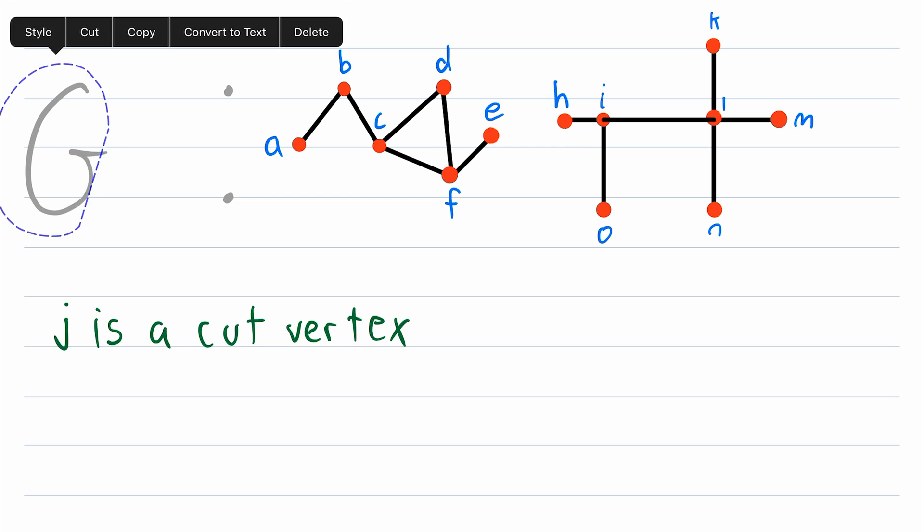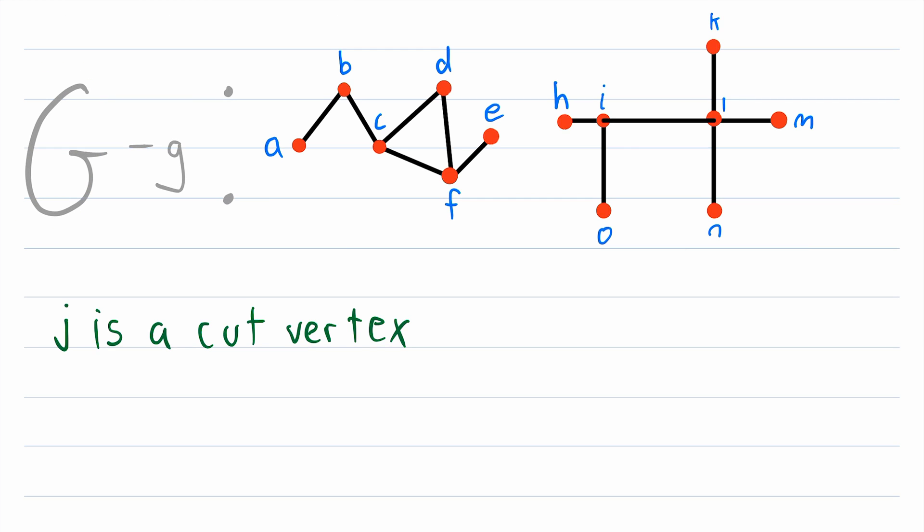So now, technically, this graph that we're looking at is the graph G minus the vertex G. So how many components are in this graph? Well, there's still only two components. So G is not a cut vertex because by deleting G, we don't create any additional components. The graph G has two components and the graph G minus the vertex G also has two components. So again, G is not a cut vertex.